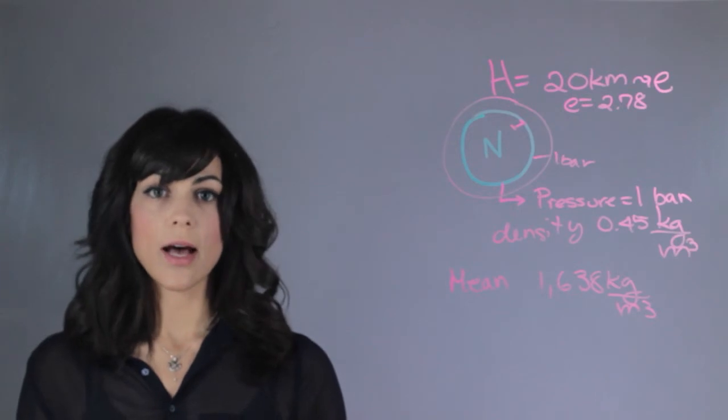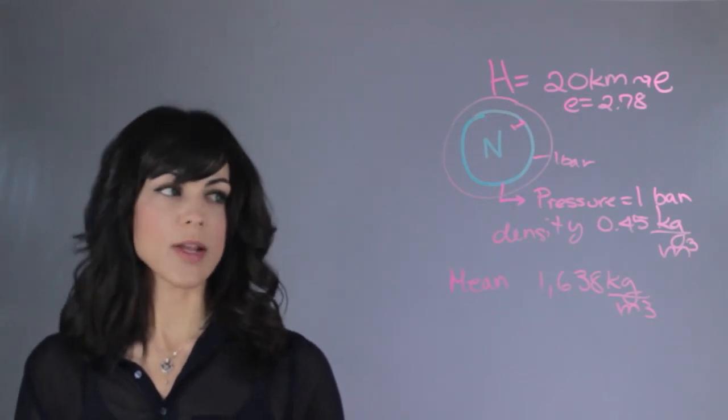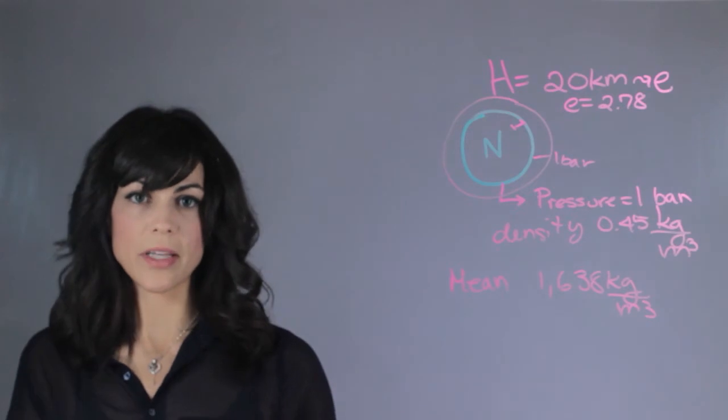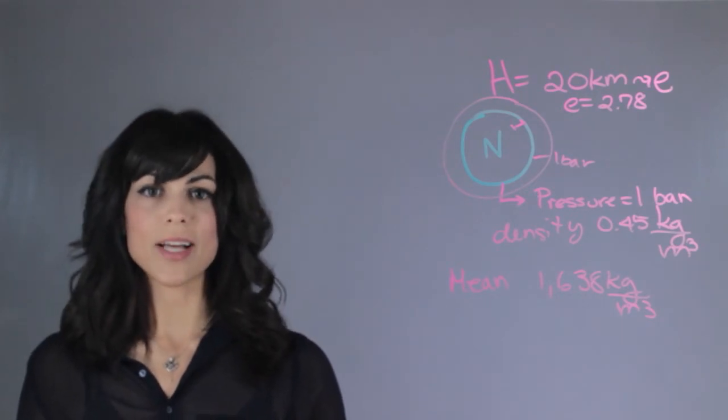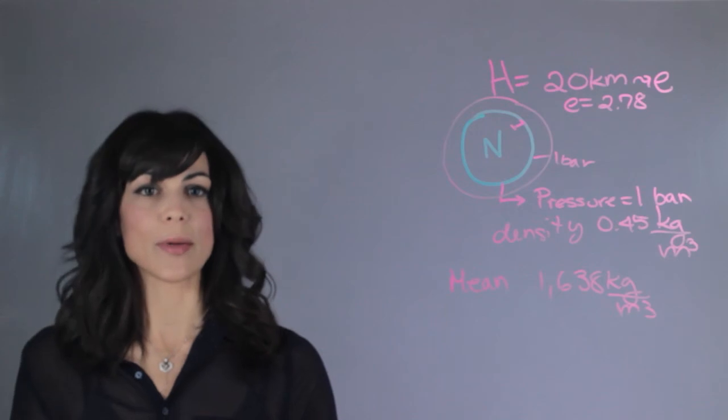So the density at ground level for the atmosphere of Neptune is 0.45 kilograms per cubic meter. My name is Aileen Perez and I'm an astrophysicist and this is the density in the atmosphere of Neptune.